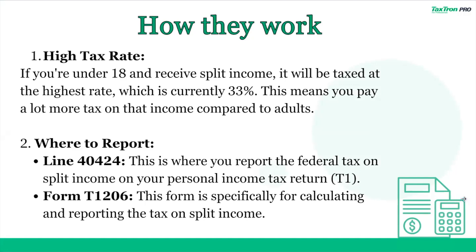High tax rate: if you're under 18 and receive split income, it will be taxed at the highest rate, which is currently 33%. This means you pay a lot more tax on that income compared to adults. Where to report? At line 40424, this is where you report the federal tax on split income on your personal income tax return, on your T1.